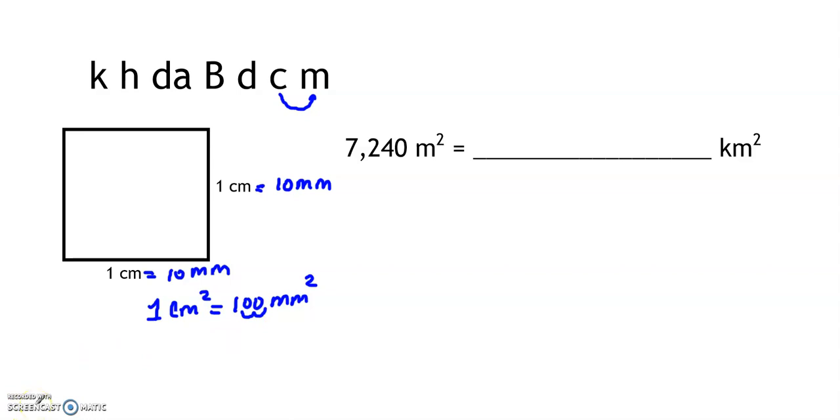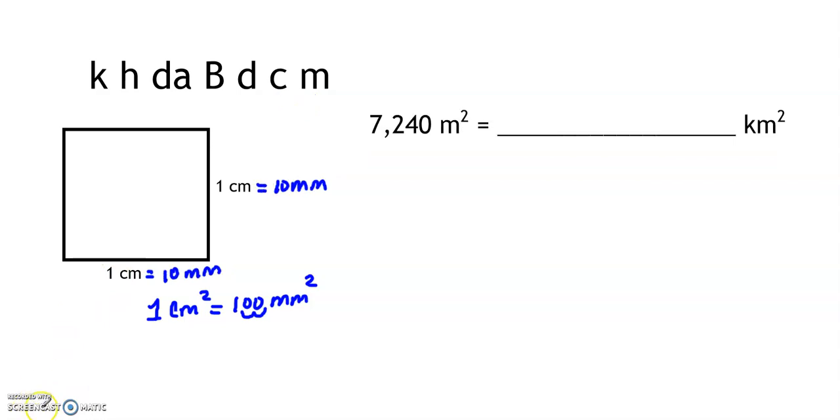This means that if I'm going to use the King Henry died by drinking chocolate milk method with square units, I have to remember that each move in regular units represents two moves in square units. Therefore, if I want to go from square meters to square kilometers, I have to count by twos. For this example,